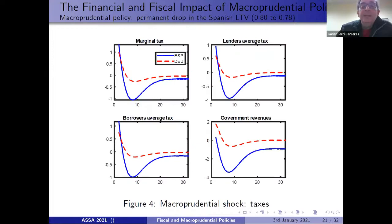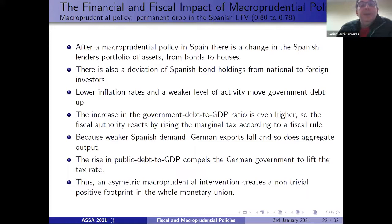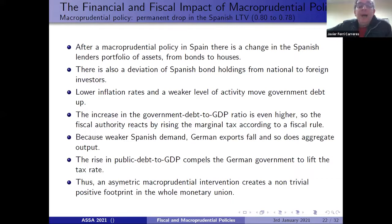To summarize the first experiment: after a macroprudential policy in Spain, there is a shift in Spanish lenders' portfolio from bonds to houses and a diversion of Spanish bond holdings from national to foreign investors. Lower inflation and weaker activity push government debt up, and the higher debt-to-GDP ratio causes the fiscal authority to raise the marginal tax rate. Weaker Spanish demand reduces German exports and aggregate output. The rise in German public debt compels Germany to also lift its tax rate. Thus, an asymmetric macroprudential intervention only in Spain creates a non-trivial fiscal footprint in the whole monetary union.